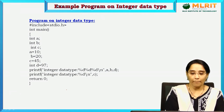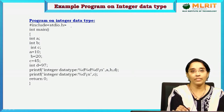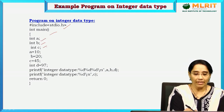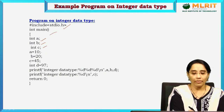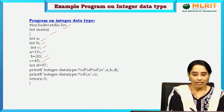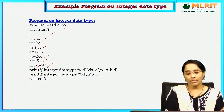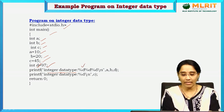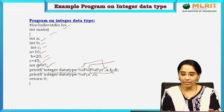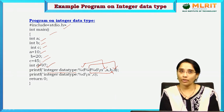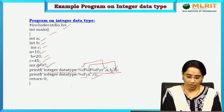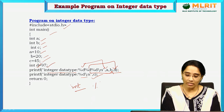Here is a sample program on integer data type. We include the header file #include stdio.h and the main section. We declared 3 variables: int a, int b, and int c, assigned values 10, 20, and 20 respectively. Another variable int d is assigned the value 97. We print these values using the format specifier %d for integer type.